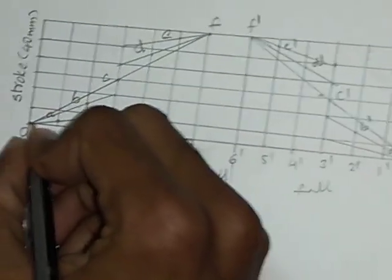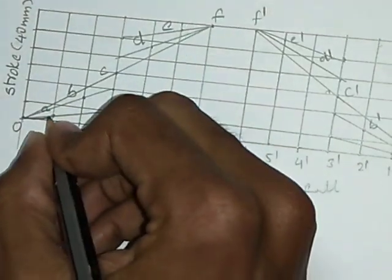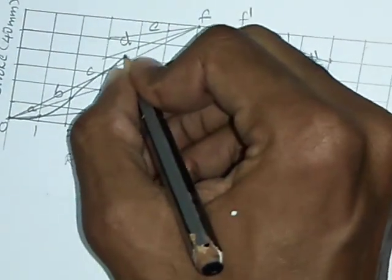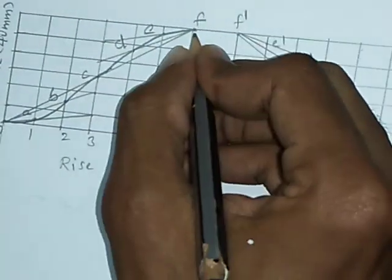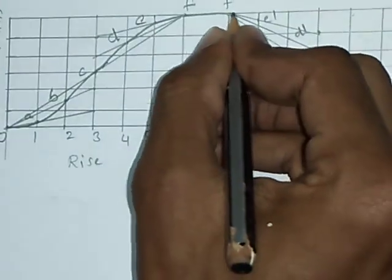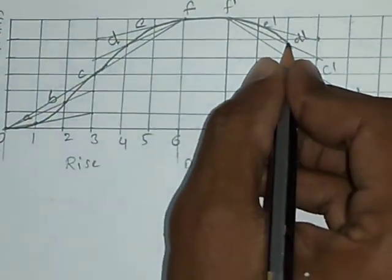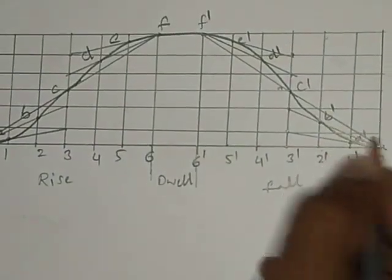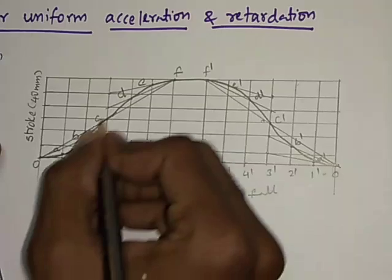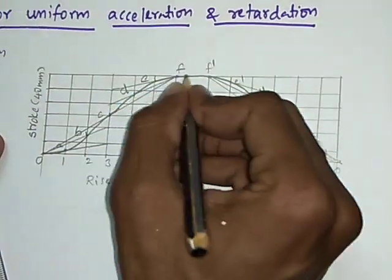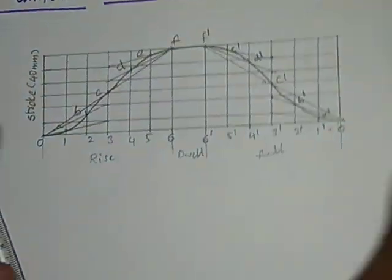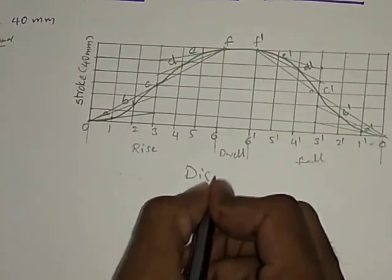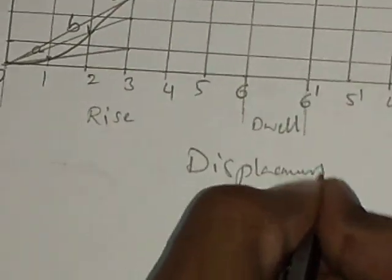Now join all these points freehand with a smooth curve, starting from corner O: A, B, C, D, E, F, F-dash, E-dash, D-dash, C-dash, B-dash, A-dash, O-dash. This smooth freehand curve through all those points is called the displacement diagram.